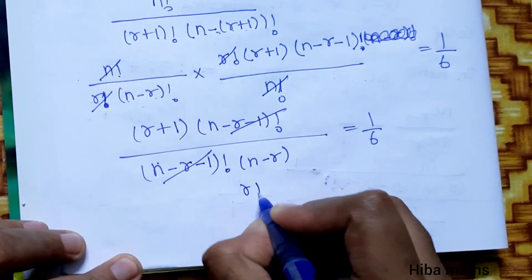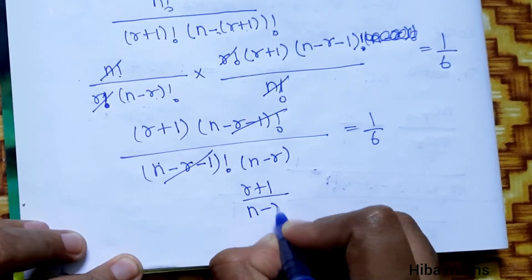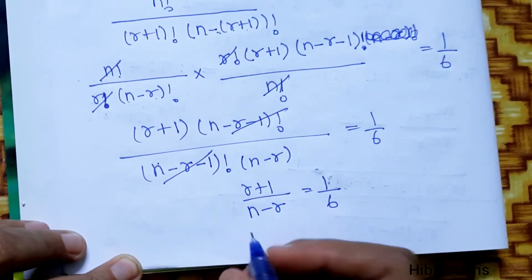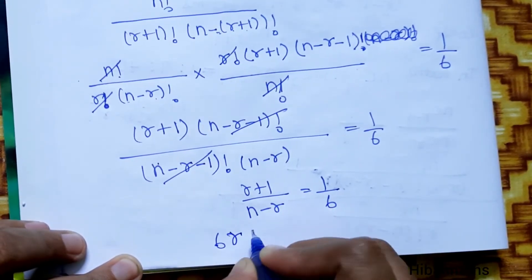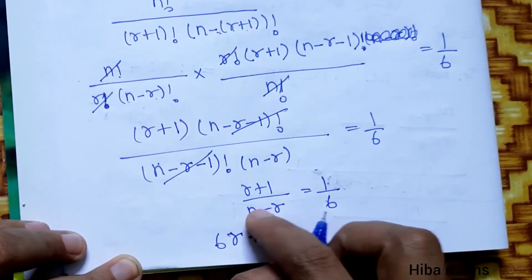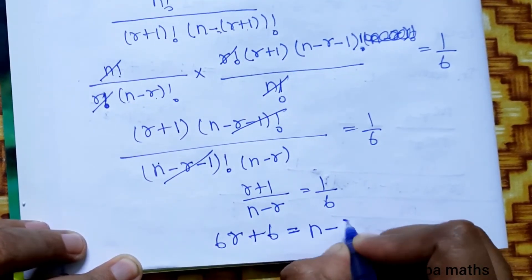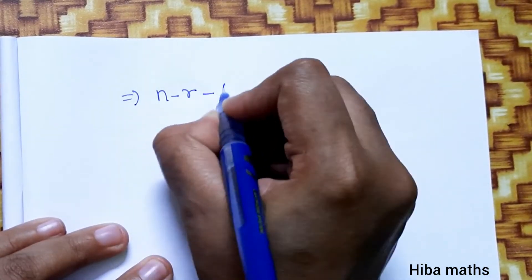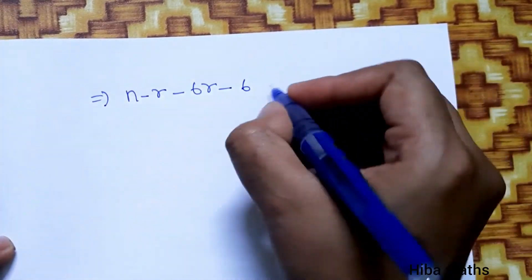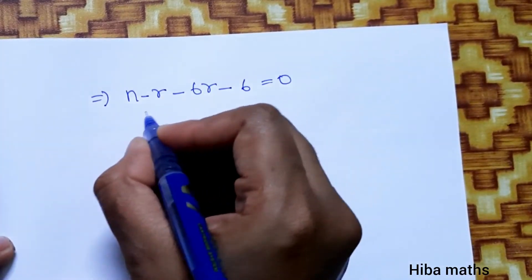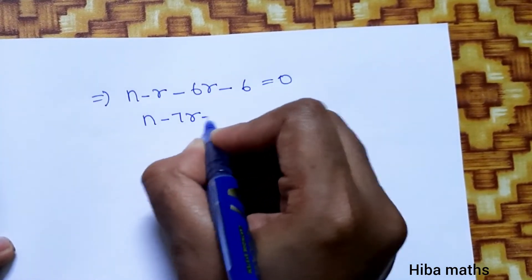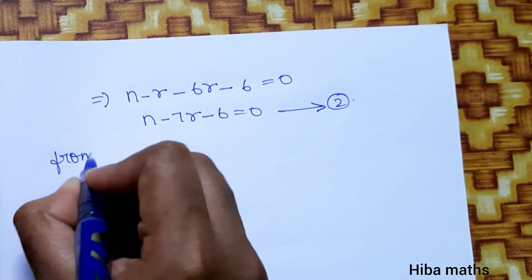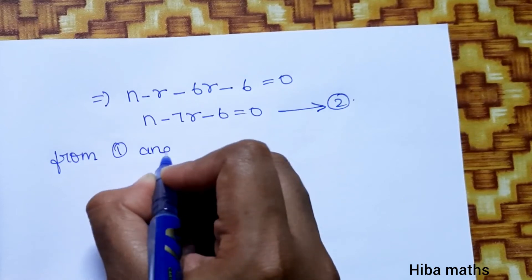Cross-multiplying: 6(r+1) = n - r, giving 6r + 6 = n - r. Rearranging: n - 7r - 6 = 0. This is the second equation.